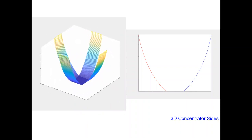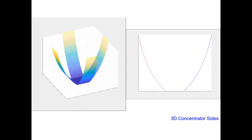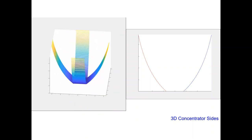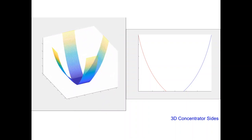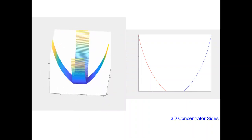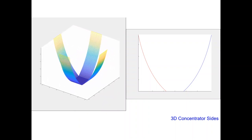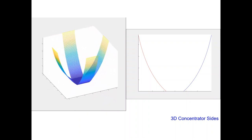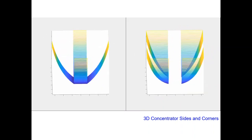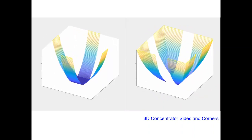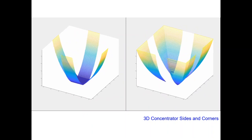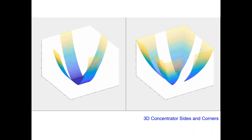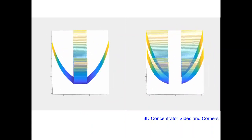To create this concentrator, we stretched the two-dimensional concentrator along a depth axis to obtain something similar to the diagram on the left. We then folded in the space between, using shapes as seen on the right, to obtain our final three-dimensional concentrator.